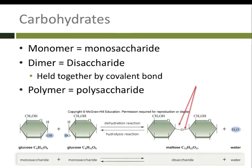Let's start with carbohydrates. Carbohydrates are what your cereal and french fries are made of — basically sugar. In the case of carbohydrates, our monomer is called a monosaccharide. Mono means one, and saccharide means sugar. So the monomer of a carbohydrate is a monosaccharide, or a sugar molecule. One example of a sugar molecule is glucose, which is a six-carbon ring.